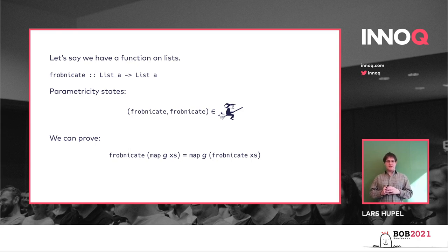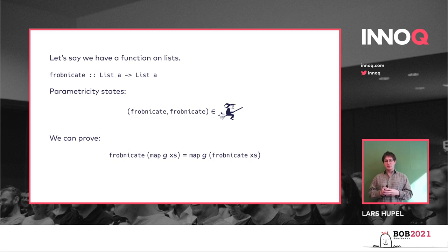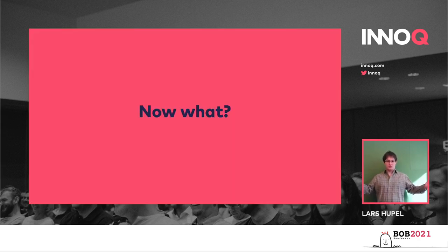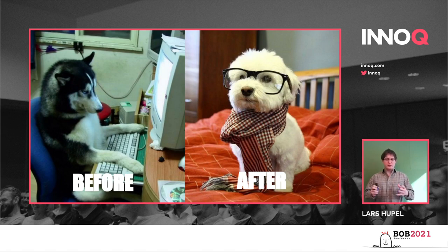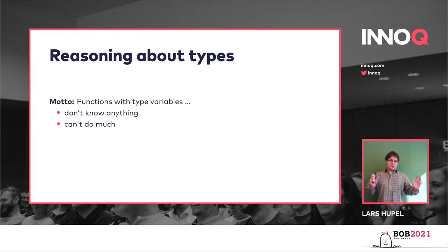You can just take a look at the type signature of frobnicate — list of A to list of A — and derive that result. The justification is in the middle, with the complicated parametricity stuff involving abstraction functions. But you get very real consequences for your real-world Haskell code. The bottom line is that we can reason about types, and the reason we can do that is because functions with type variables don't know anything and can't do much. If you have an A as an input or output, you don't know what that A is — it can be anything, and because you don't know, you can't do anything with it.